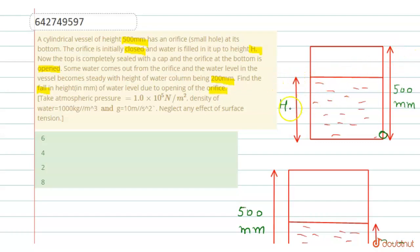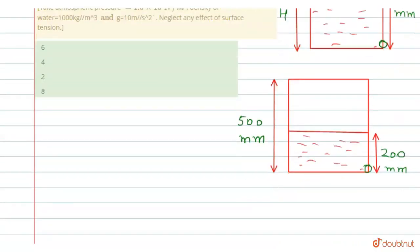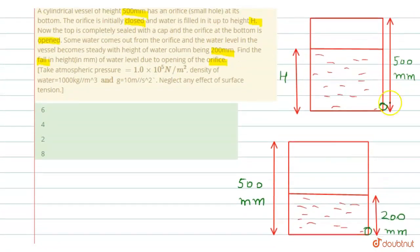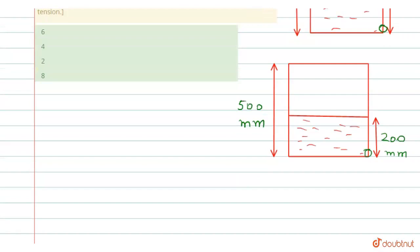Here is height h. The water is filled up to height h and 500 mm is the height of the cylindrical vessel. Now in this level, the height of the water column being 200 mm when the small hole is open. First of all in this question, we